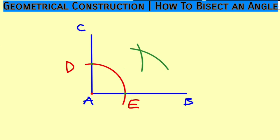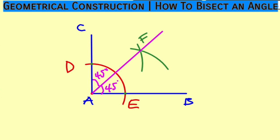Take away your compass. Call this point of intersection F, where the two arcs intersected. Now we are done — use your ruler to connect point F and point A together. What you are seeing here is 45 degrees on each side, making 90 degrees. If you like, you can use your protractor to confirm that.